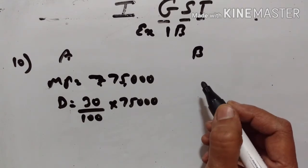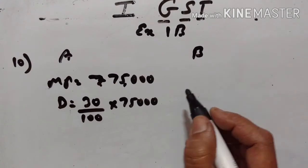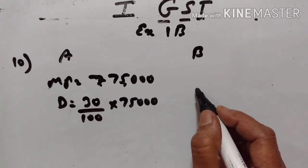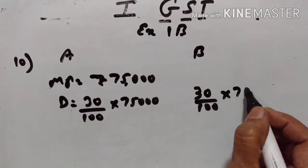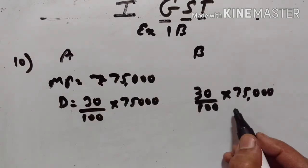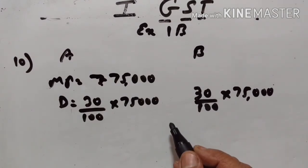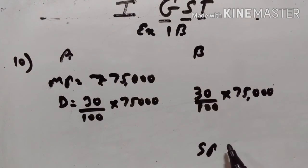The wholesaler B raises the market price of the TV set bought by 30% and then sells it to the dealer C. The rate of GST is 5%. Find the tax paid by wholesaler B to the government.